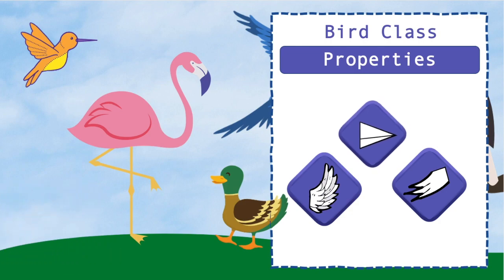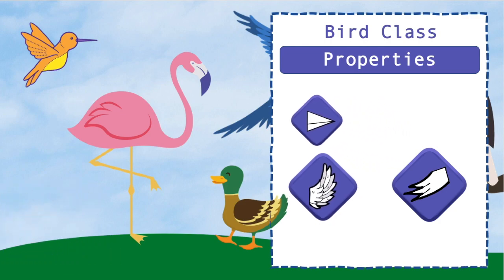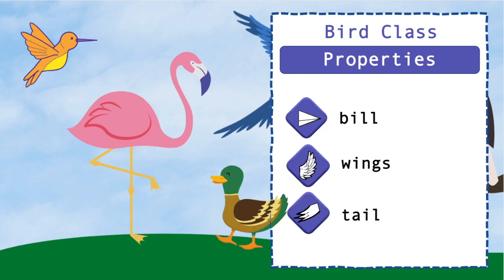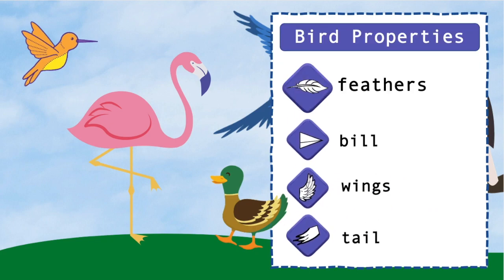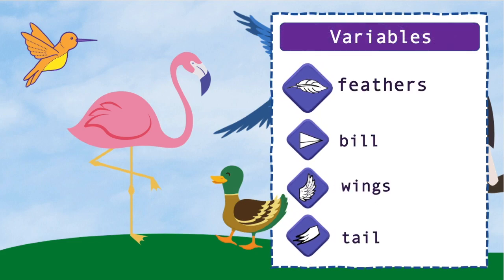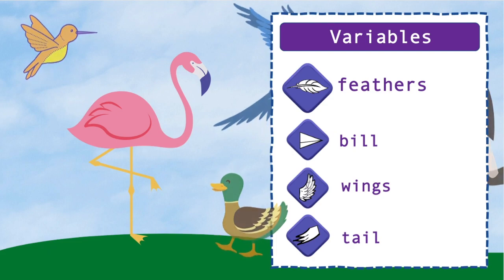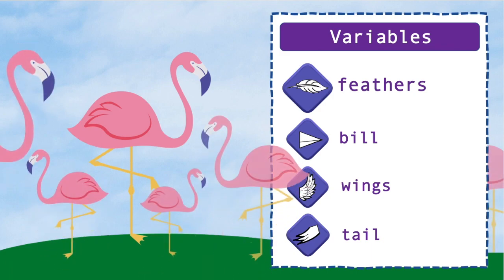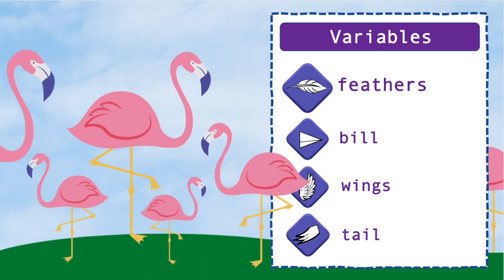So all birds share certain characteristics like bill, wings, tail, and feathers. But do all feathers of a hummingbird look the same as a flamingo or a duck? They don't. Actually, all of these traits including feather color are also variables, which means they can vary or change between classes of bird. It can even vary between individual birds of the same class.